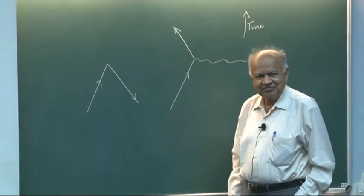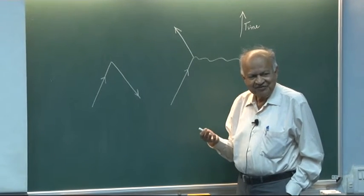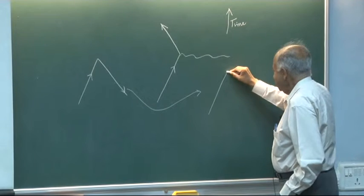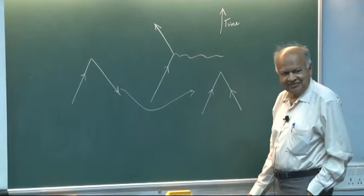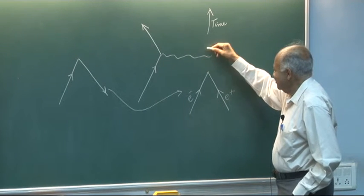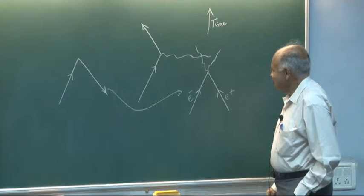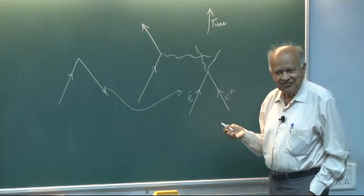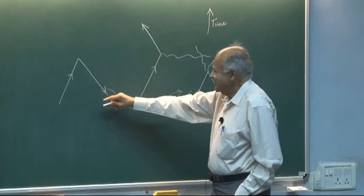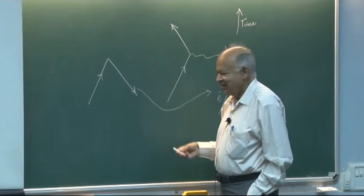But here one brings in Feynman's interpretation of electrons going backward in time which was derived essentially from Dirac's idea of a positron. So what you will say is that this result can be reinterpreted as this, and you can argue that you got an electron and a positron and they are annihilating, so there is no electron or positron left on this side. But you can have photons coming as a means of conserving energy and momentum.